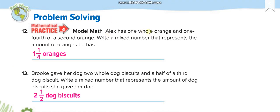Alex has one whole orange and one fourth — that means one over four. She also has two whole dog biscuits and a half — two whole and one over two, because half means one over two.